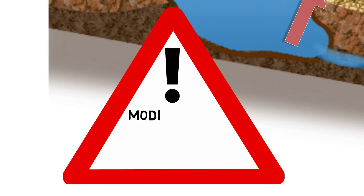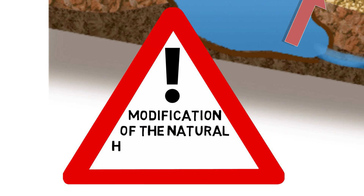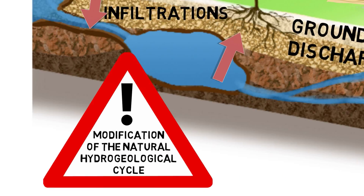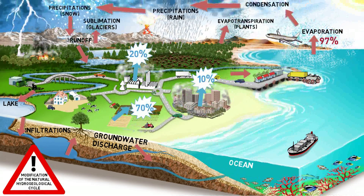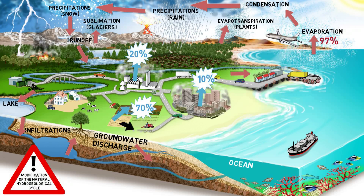Obviously, withdrawal of fresh water for human use causes a modification of the natural hydrogeological cycle. But the damage is not limited to these alterations — arguably even more dangerous is the water contamination that follows. Humans are in fact polluting water mainly with rapidly increasing inputs of nitrogen and phosphorus for enhanced production in agriculture and livestock farms.